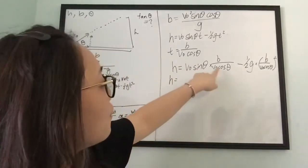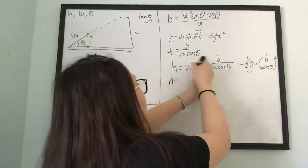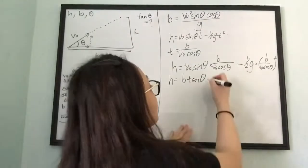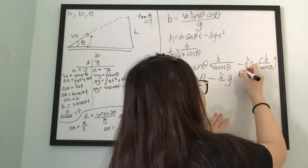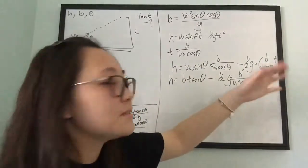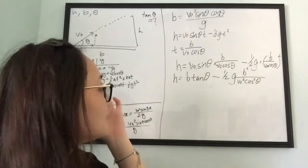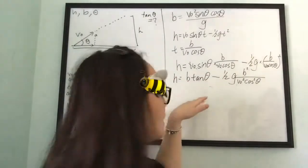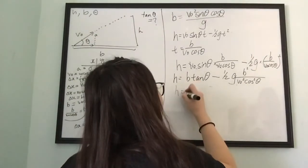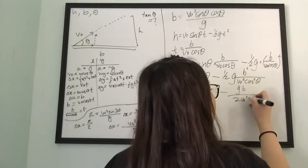Right here, sine over cosine is tangent, and the v-naught terms cancel out — so that becomes b·tan(θ). On the other side, it's minus one-half g times b² over v-naught²·cosine²(θ). Don't forget to square the cosine, otherwise you'll get it wrong. We'll have to keep b in the answer because the answer choices include h, b, and tan(θ) — so: h equals b·tan(θ) minus g·b² over 2·v-naught²·cosine²(θ).